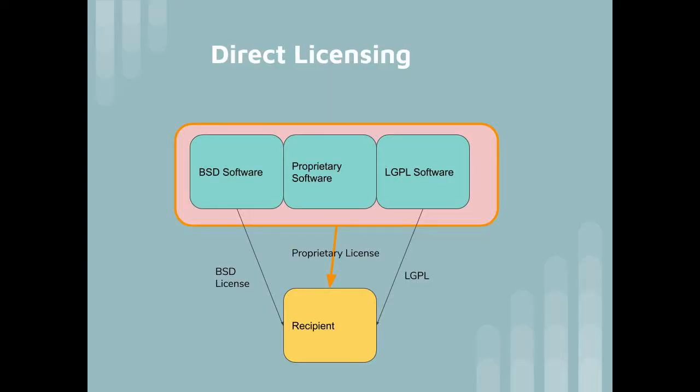First, let's understand what the purpose of a license notice is. A license notice informs a recipient of a software copy that the software is available under an open-source license. Open-source licensing is a so-called direct licensing model. When you redistribute open-source software, you are not sub-licensing rights to the software. You are merely distributing a copy and informing the recipient that the license rights come directly from the owner of the copyright.